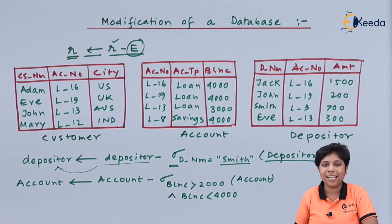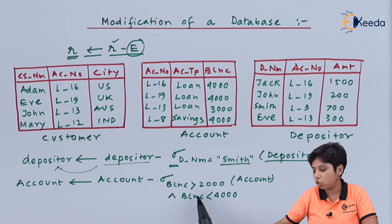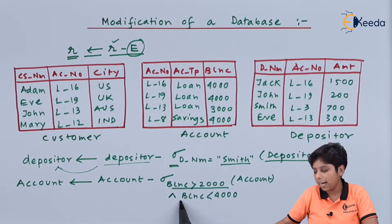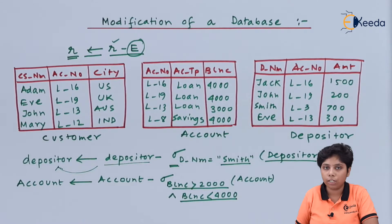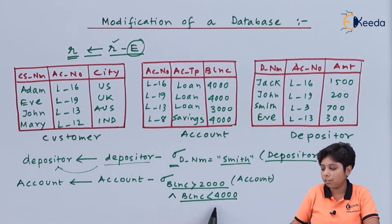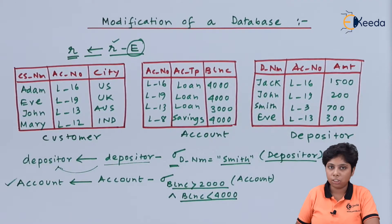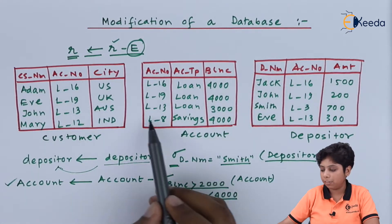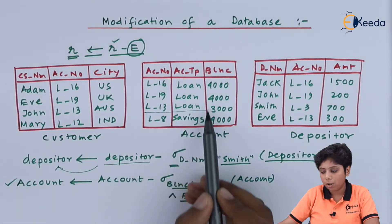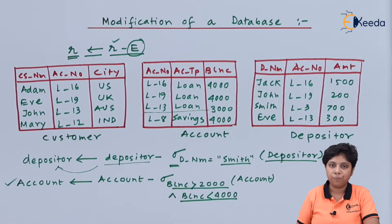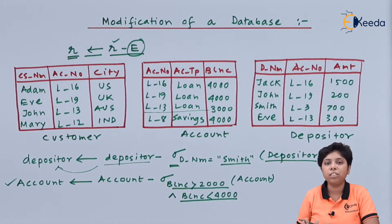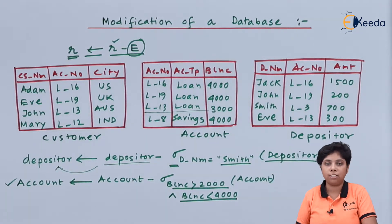Here we are using an example where we join predicates: we are deleting all the records from the account relation which have a balance greater than 2000 but less than 4000. As a result of this delete operation, the record L13 will be removed from our relation. That is one example of joining two predicates using a selection operation inside the delete operation.